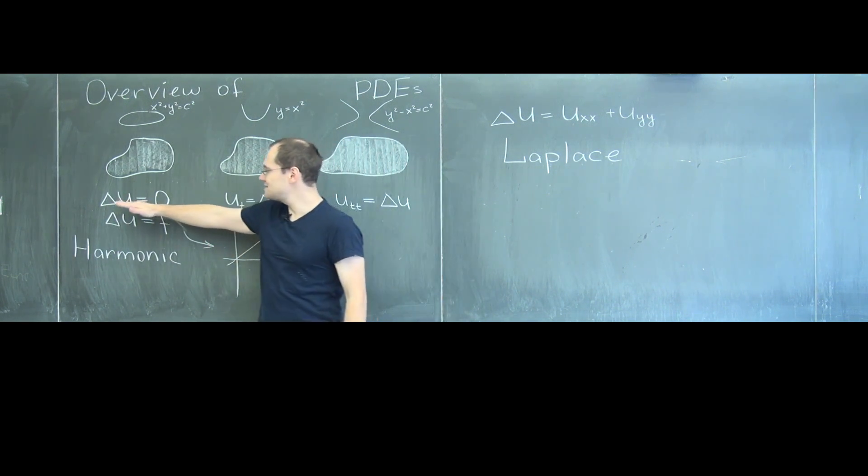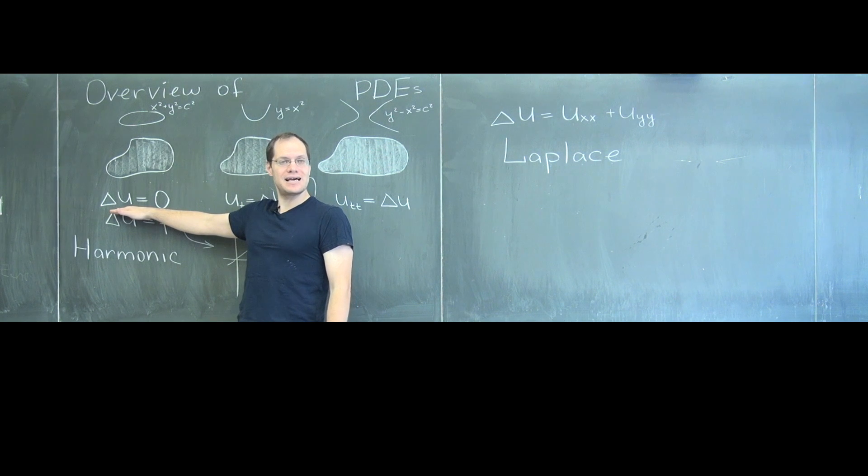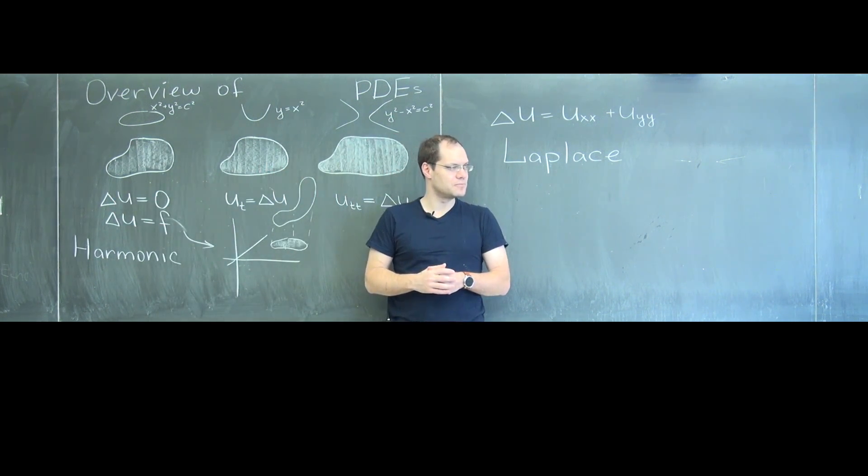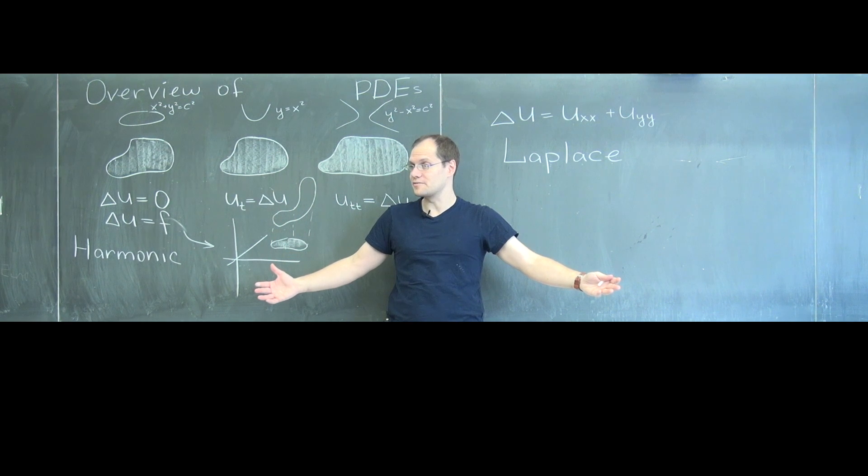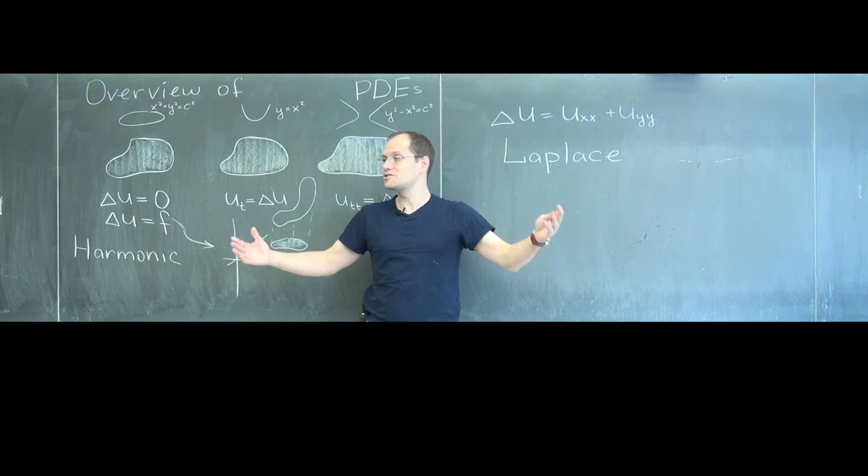When it's at equilibrium, it'll satisfy the snapshot equation. But if it's not at equilibrium, for example suppose that in a moment the radiator was turned off, then all of a sudden the room will start cooling until it probably reaches some kind of average.